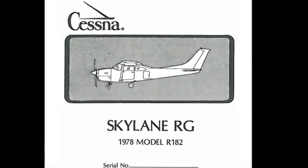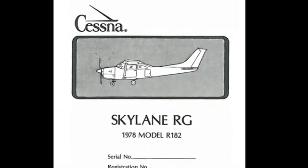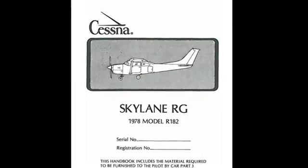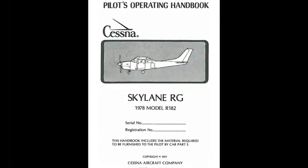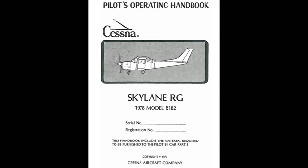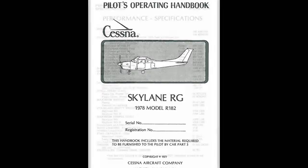This is going to be a weight and balance for a Cessna 182RG. To do a proper weight and balance for an airplane we actually have to go to its Pilot Operating Handbook, or the POH — and in the case of older airplanes, sometimes they're called information manuals. Today we're going to use a Skylane RG 1978 model R182, which is the retractable gear Cessna 182.